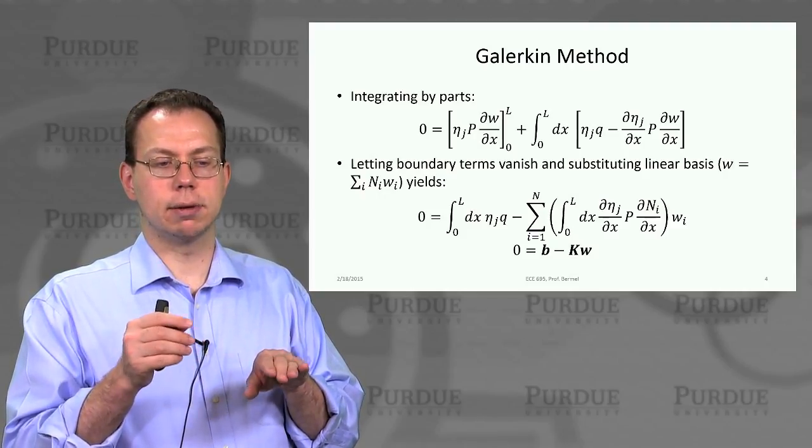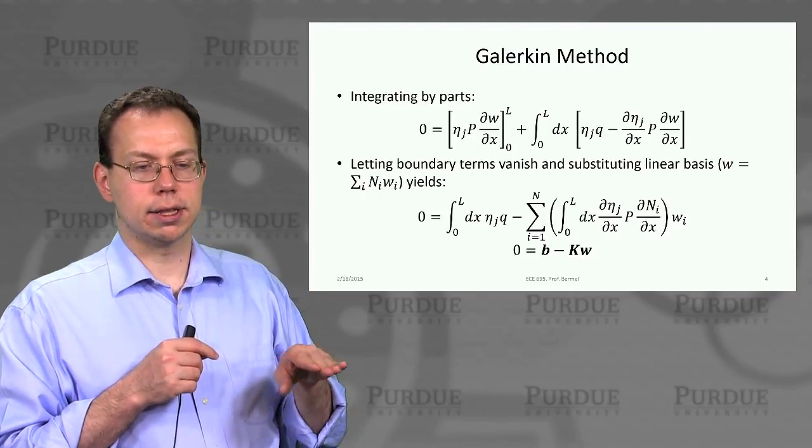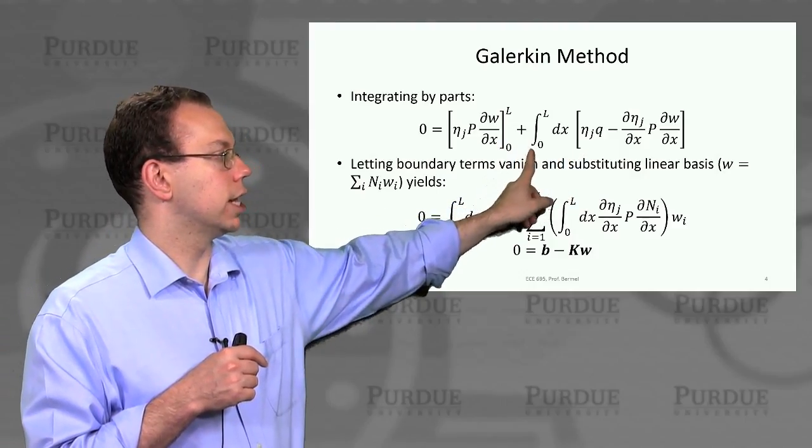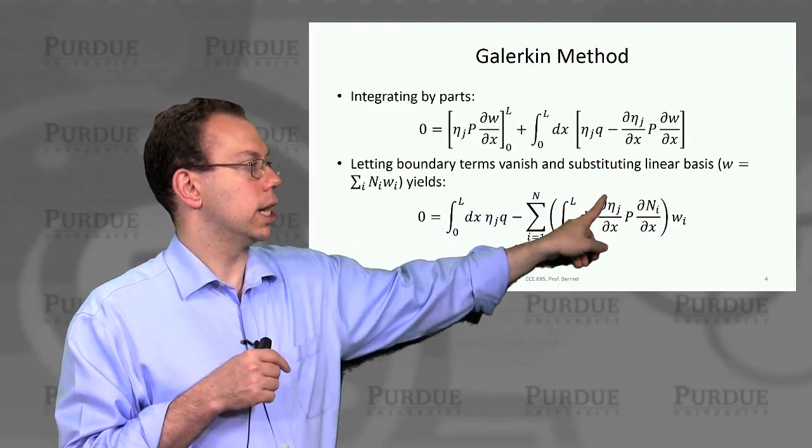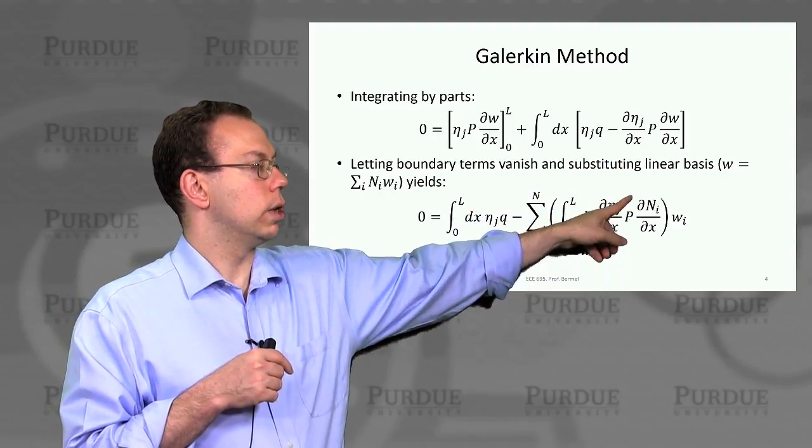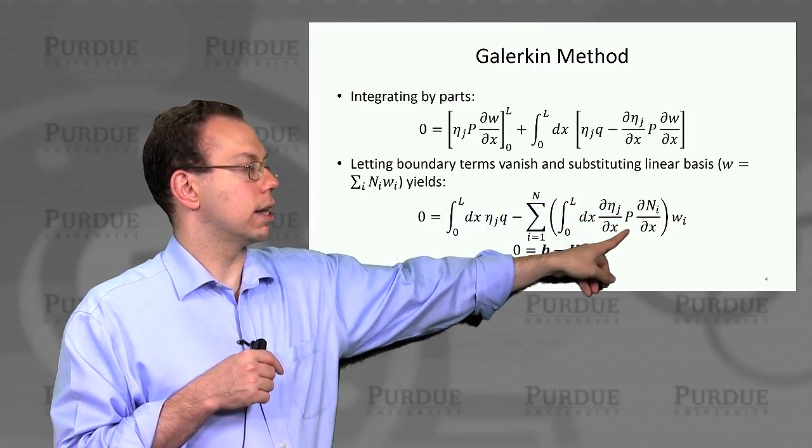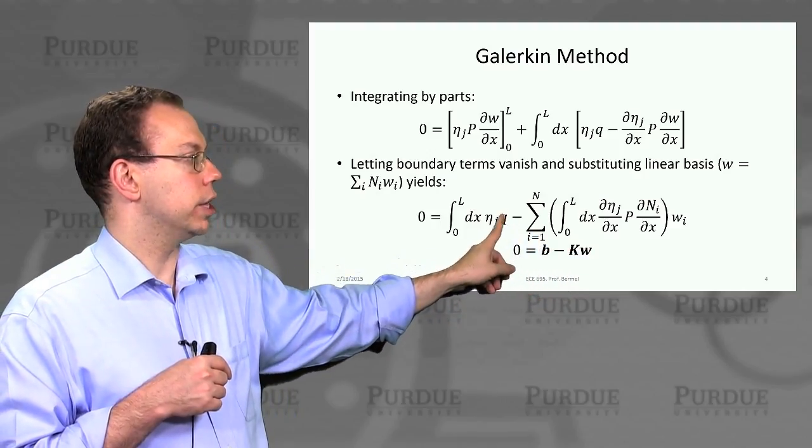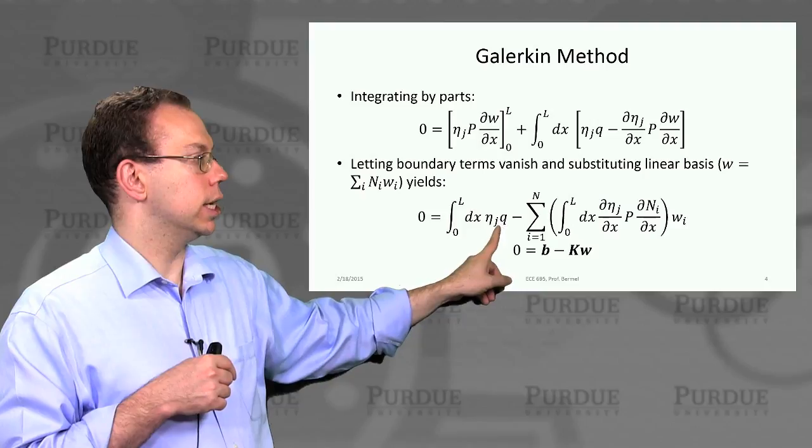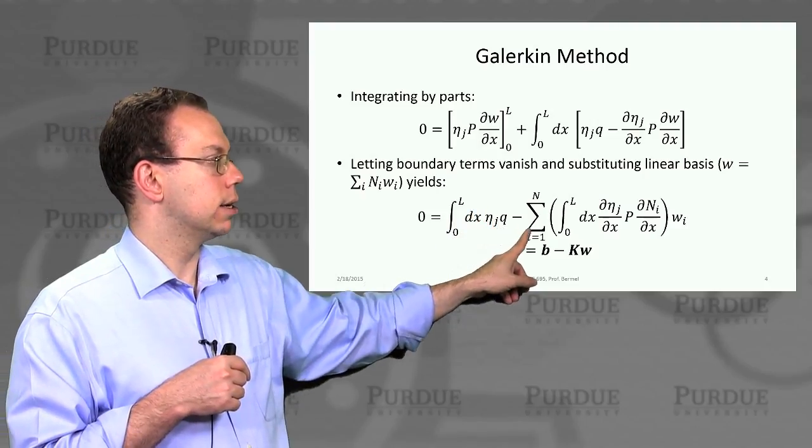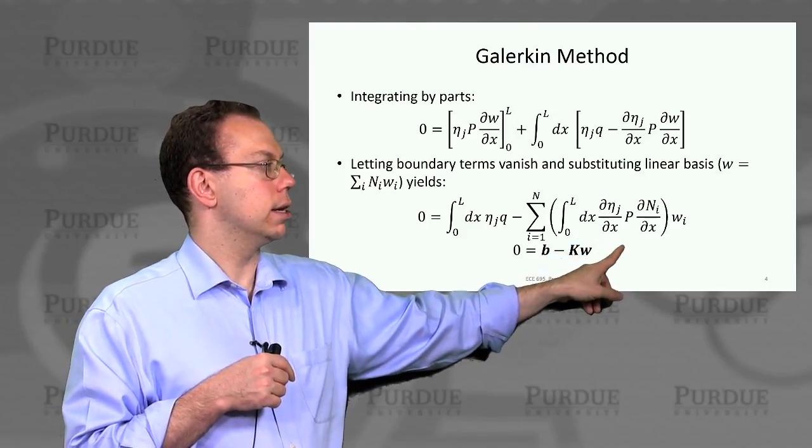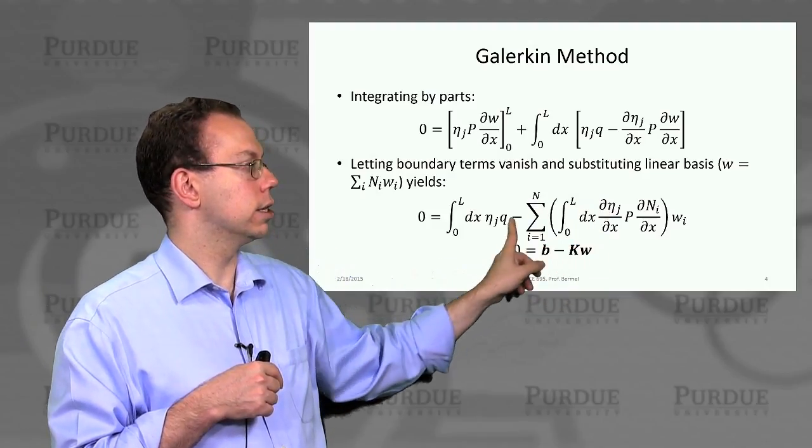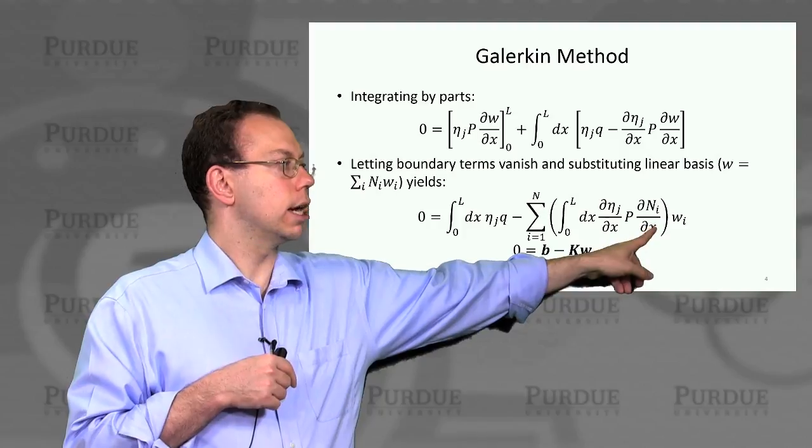Then we can substitute a linear basis for w. We write w as the sum of w i's. That leaves us with the second term since the first term vanished. The first derivative in w becomes a first derivative in n i and w i is just a constant. We can rewrite this whole thing as the first term being b, and this set of terms as k j i times w i.